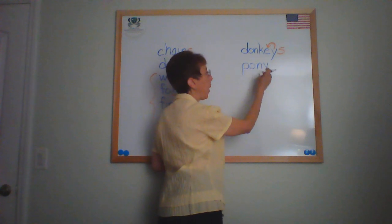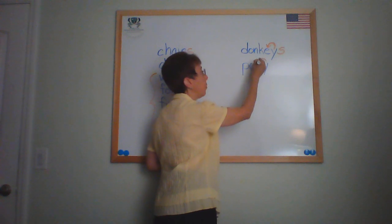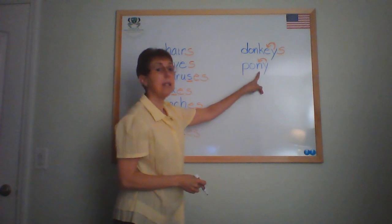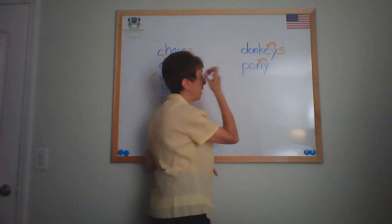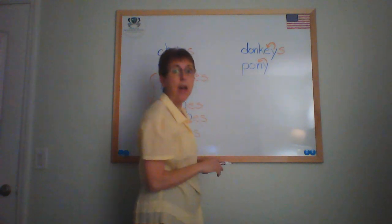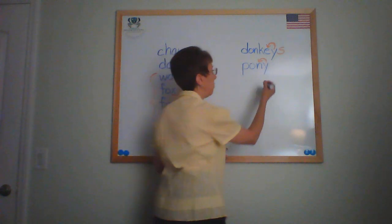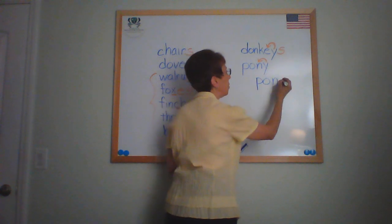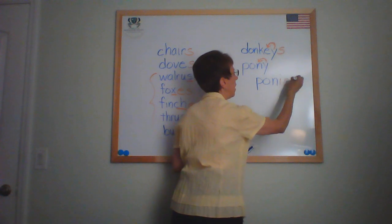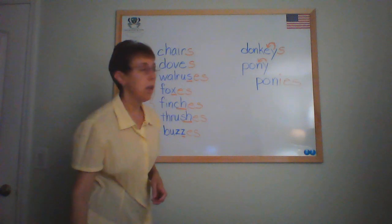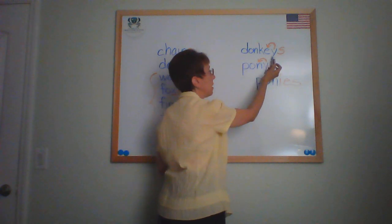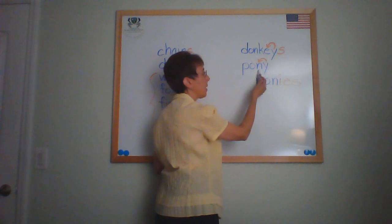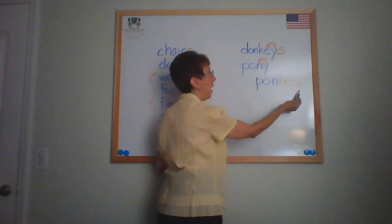Here we have pony. Pony ends in a Y, and the letter before the Y is not a vowel — it is a consonant. So when it is not a vowel, that's when we need to change the Y to an I and add ES. So pony becomes ponies: P-O-N, we change that Y to an I and then we add ES. When it ends in a Y, always look at the letter that comes before the Y. When it's a vowel, you just add S. When it's a consonant, change the Y to an I and add ES.